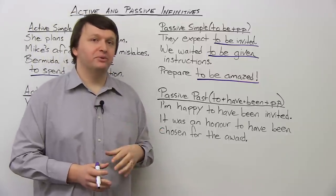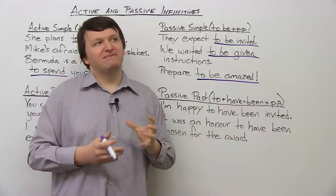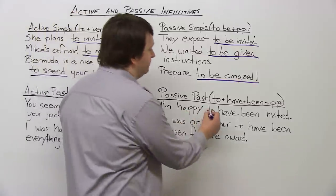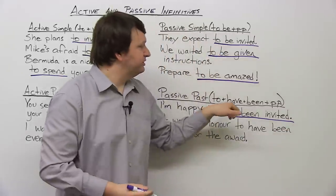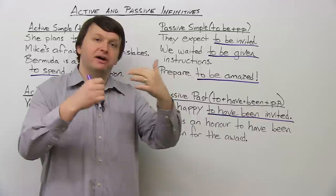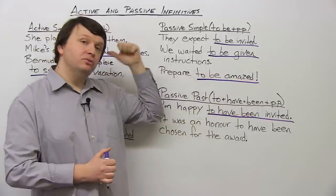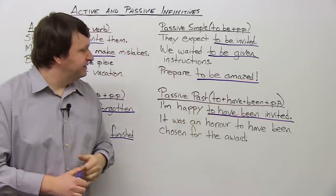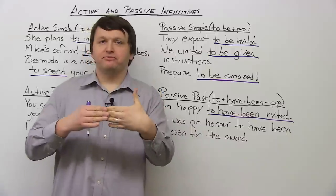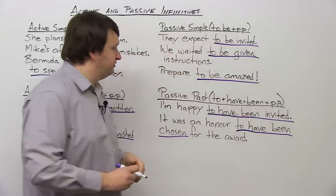Finally, let's look at the passive past, which — just like active and passive gerunds — is the longest construction and the least frequently used by native English speakers. 'I'm happy to have been invited.' The structure is 'to have been' plus the past participle. I'm happy now because I was invited in the past. 'Happy' is an adjective, and many adjectives are followed by infinitives. And: 'It was an honor to have been chosen for the award' — I was chosen for the award in the past, kind of like a past perfect construction.